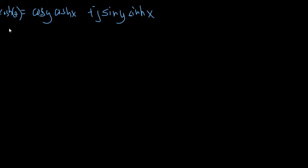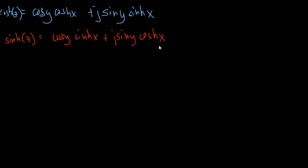You could also have this for the hyperbolic sine of a complex number. The hyperbolic sine of Z is equal to cosine Y times hyperbolic sine of X, plus J sine Y times hyperbolic cosine of X. These are very important formulas that you should remember. Thank you for watching this video, and as always, enjoy learning.